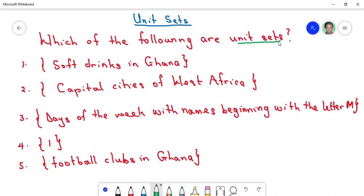We said a unit set has only one member. So let's look at those examples. Number one: soft drinks in Ghana. How many soft drinks do we have in Ghana? You realize that there are so many soft drinks. Can you mention some of them?